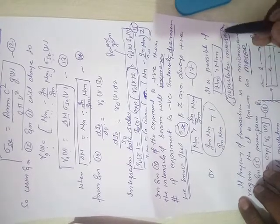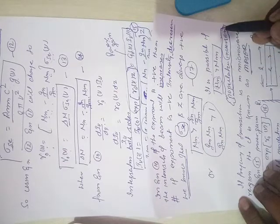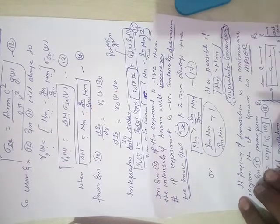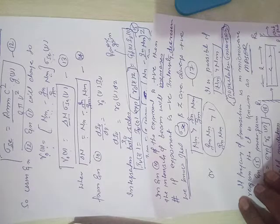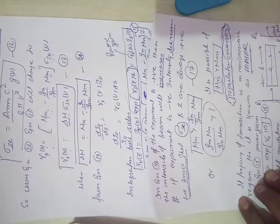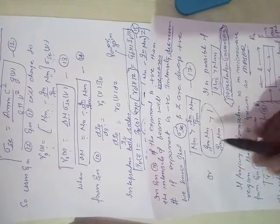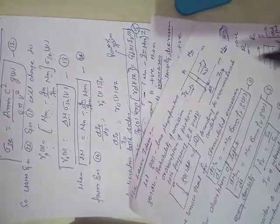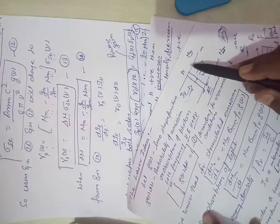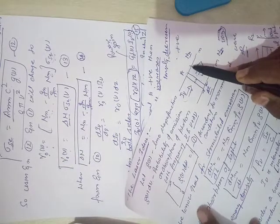Population inversion, as it is clear from its name, inversion means something is that we are not generally expecting. In a general case, we say that the atoms, ions, or molecules in the ground state are larger as compared to the excited state.